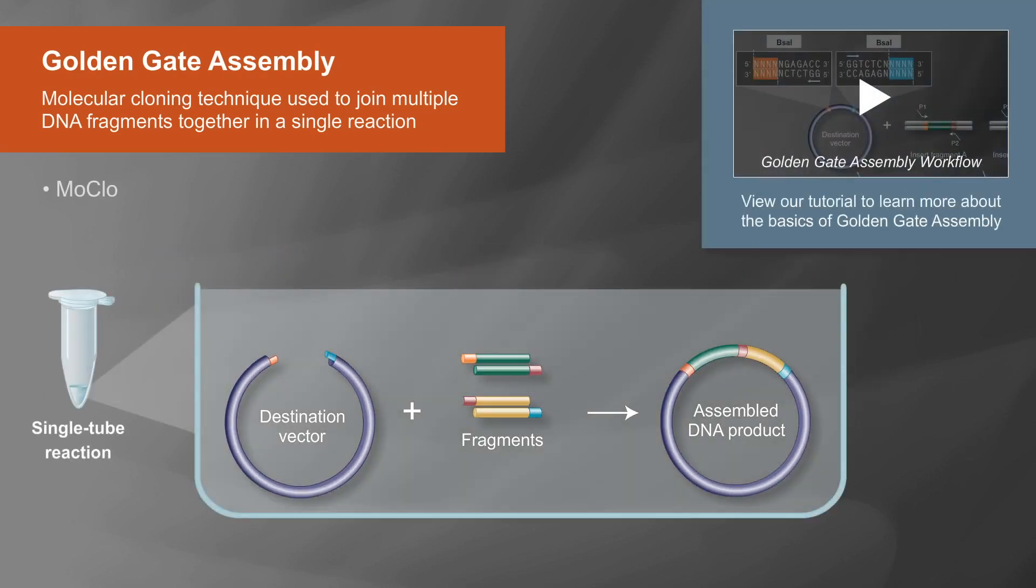Golden Gate methods, including MoClo, GoldenBraid 2.0, Mobius Assembly, and EMMA, are used by the synthetic biology community to facilitate sharing of standardized parts in assembly.